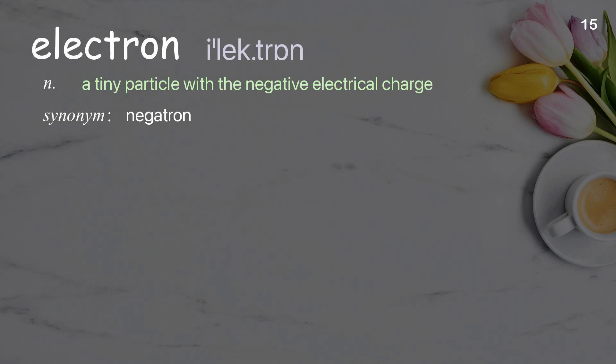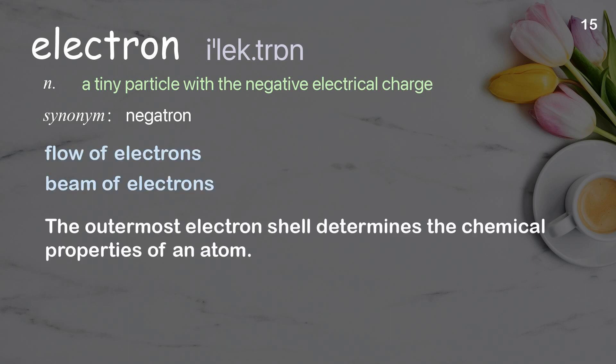Electron: A tiny particle with a negative electrical charge. Examples: Flow of electrons, beam of electrons. The outermost electron shell determines the chemical properties of an atom.